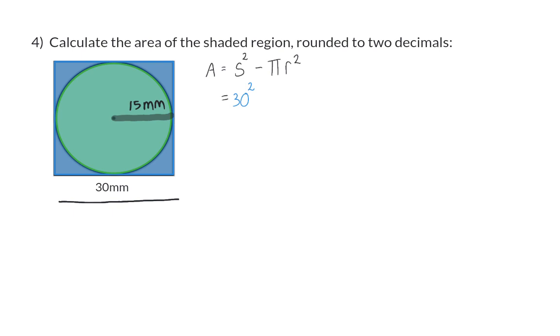So, for the circle, we have pi times the radius squared. The area of the shaded region will then be 193.14 millimeters squared.